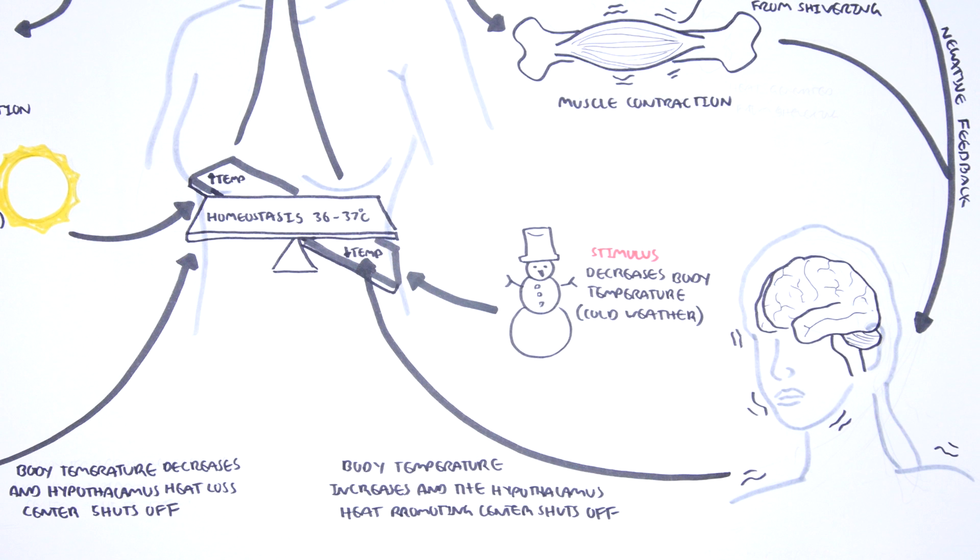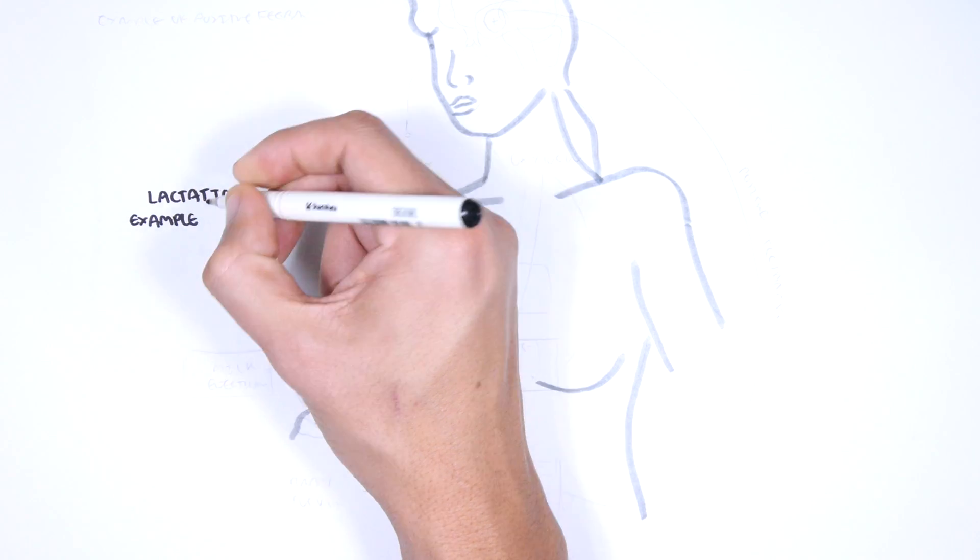While negative feedback is the main driver of homeostasis, there is also something called positive feedback, which is a self-amplifying cycle in which a physiological change leads to an even greater change in the same direction. In a way, positive feedback tries to maintain homeostasis, but often with a price. Let's take a look at a positive feedback example, which is a woman breastfeeding, lactation.